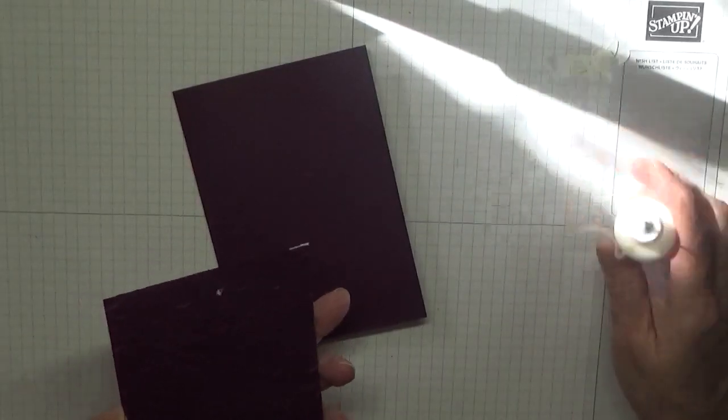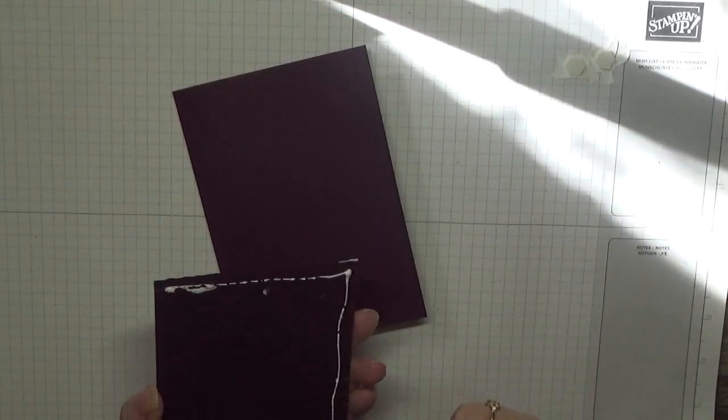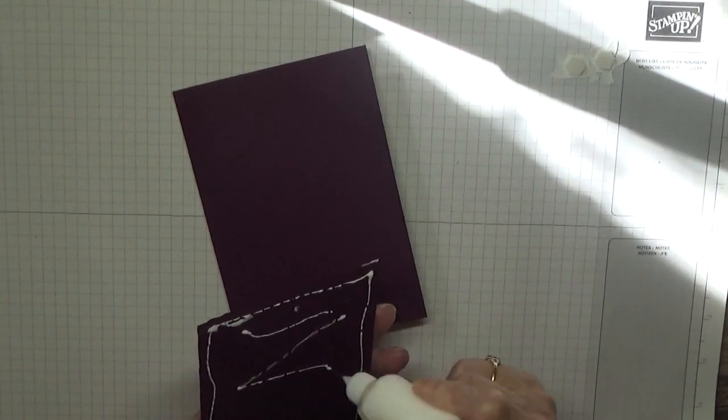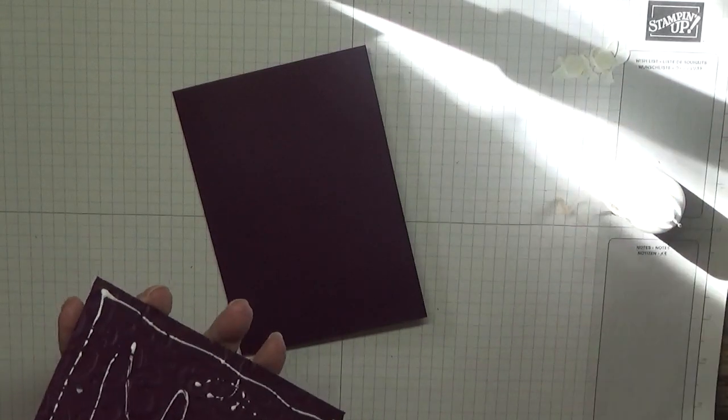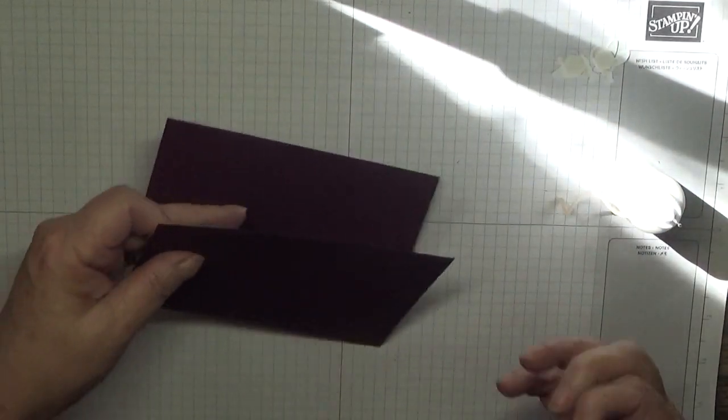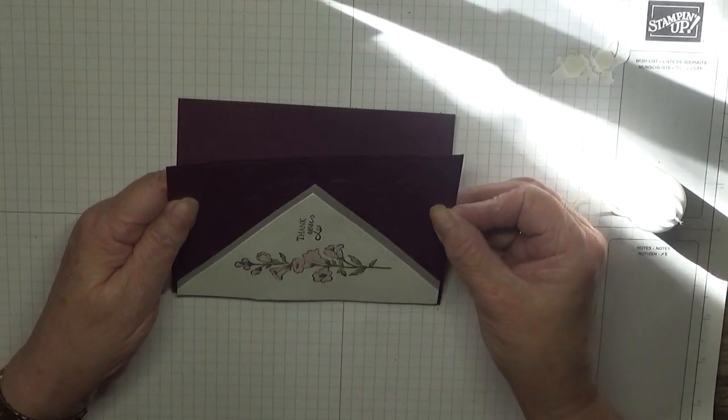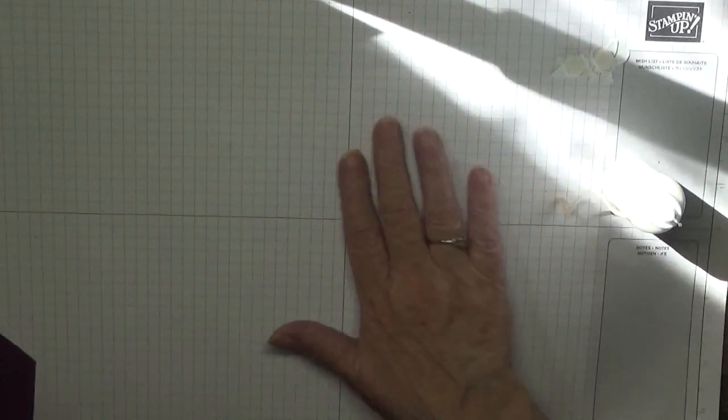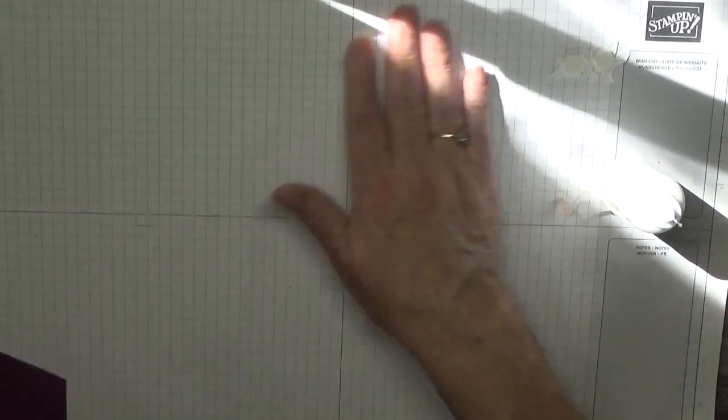And now we are going to glue that on there. Extra glue on this because it's embossed. Feels a bit sticky there—not anymore.